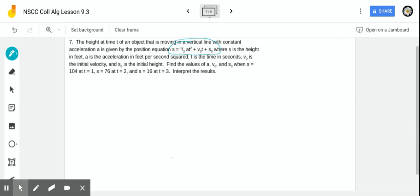We're going to need that. S is the height. A is the acceleration in feet per second squared. T is the time. V sub zero is the initial velocity, and S sub zero is the initial height. So we are supposed to solve for A, V sub zero, and S sub zero. And we're given different information.